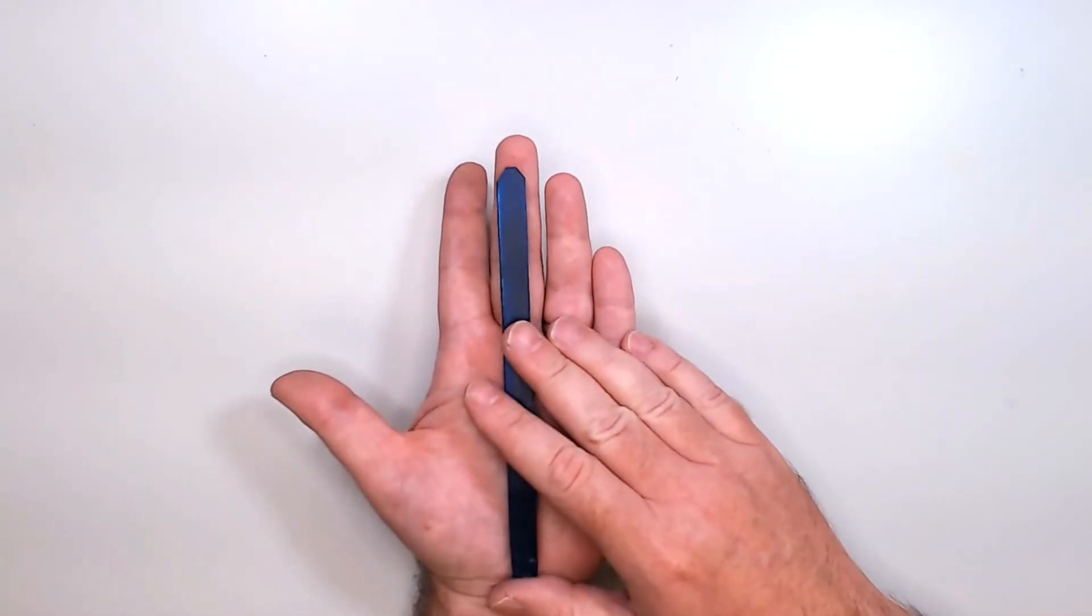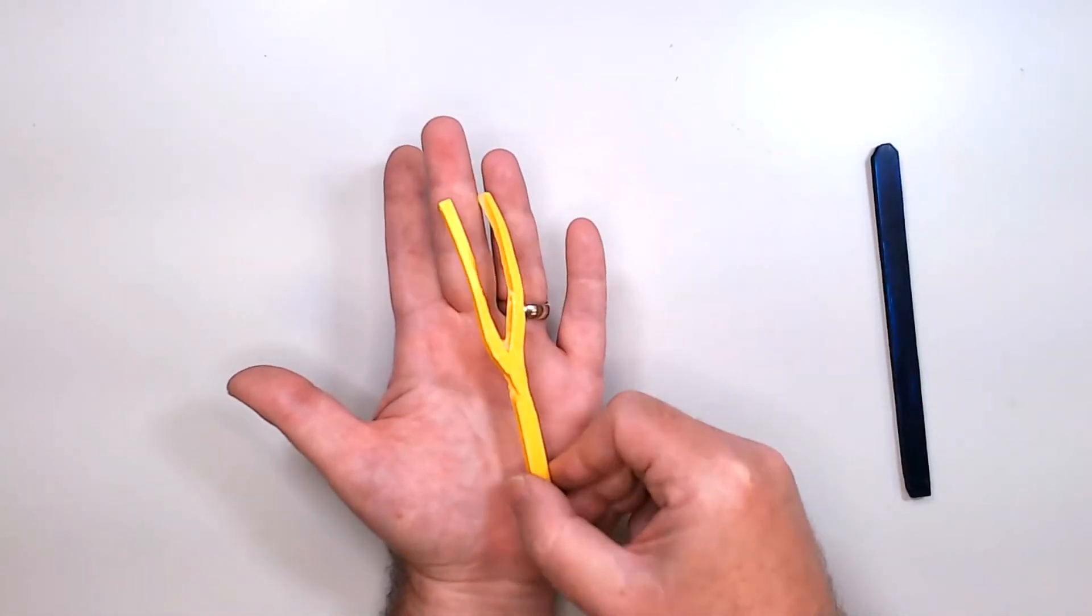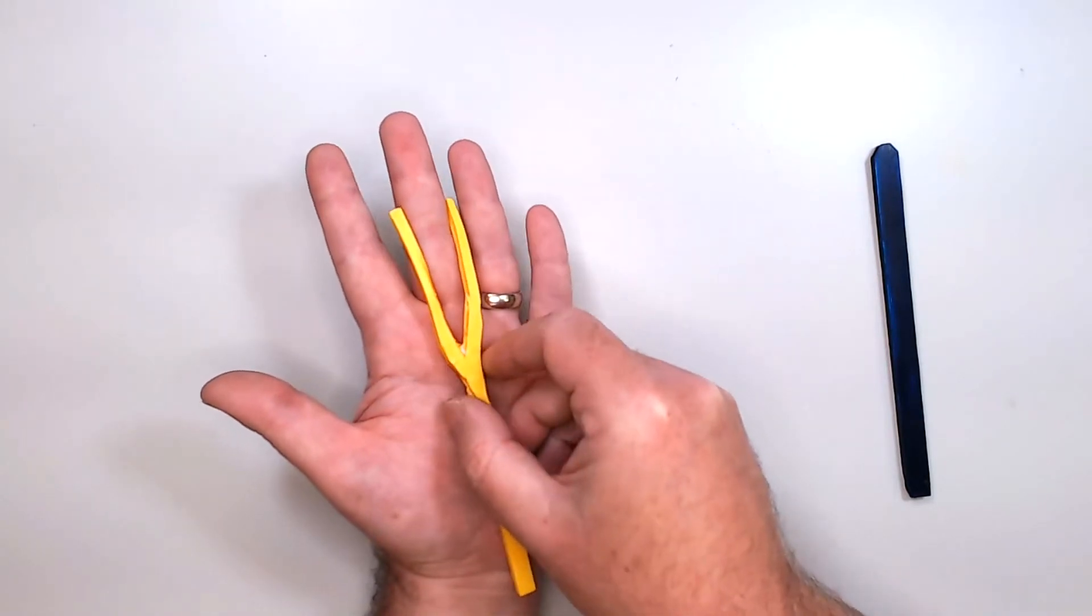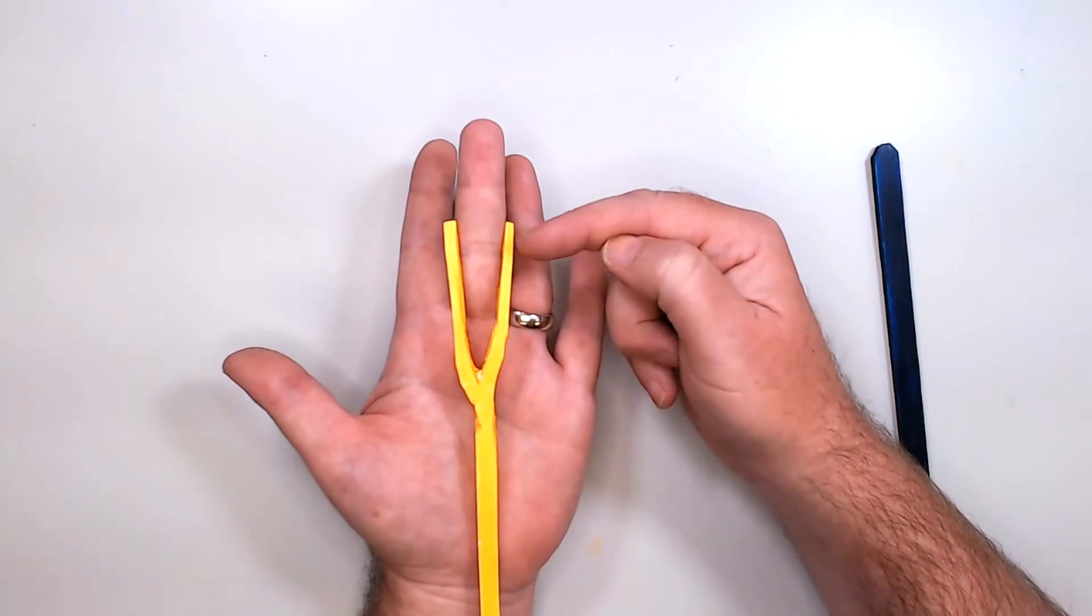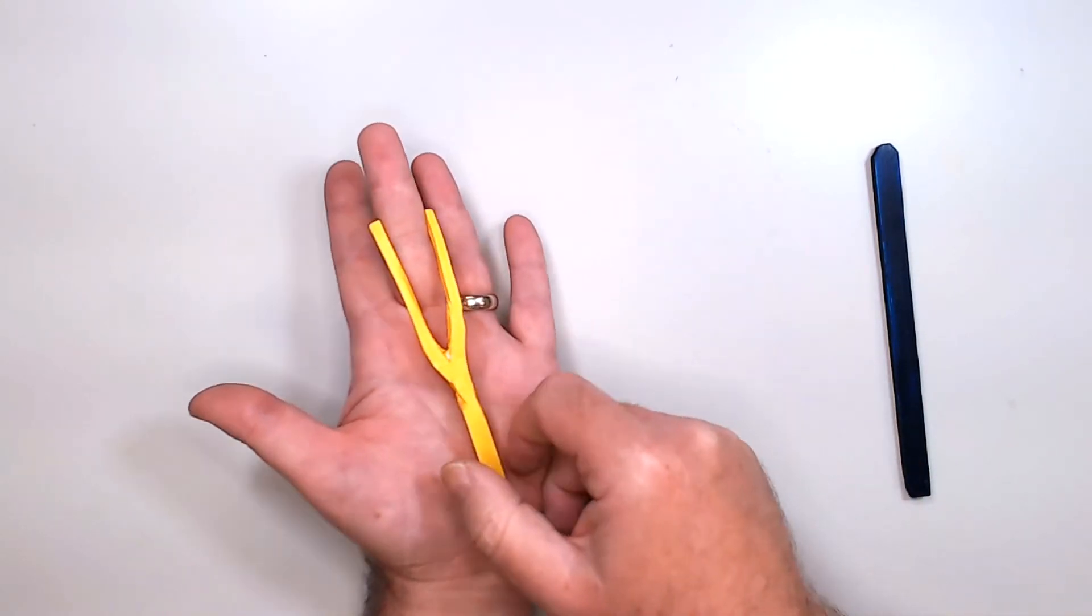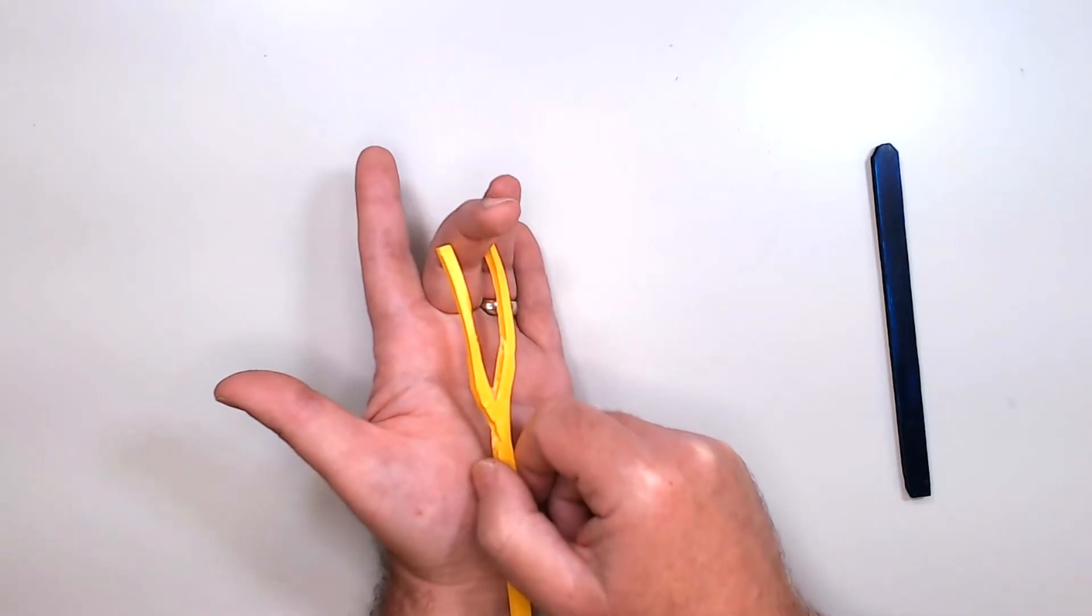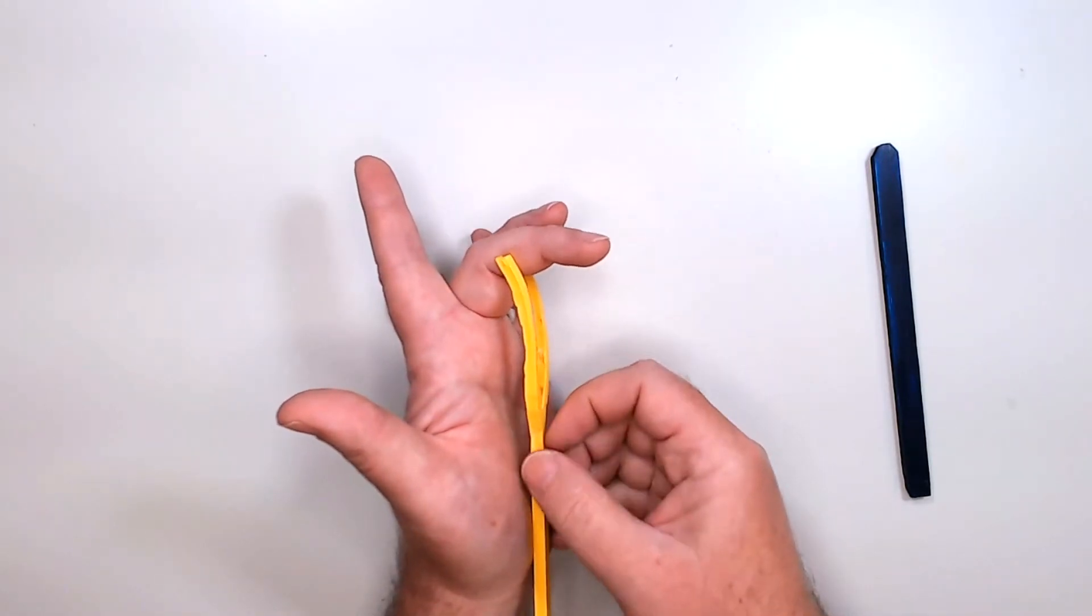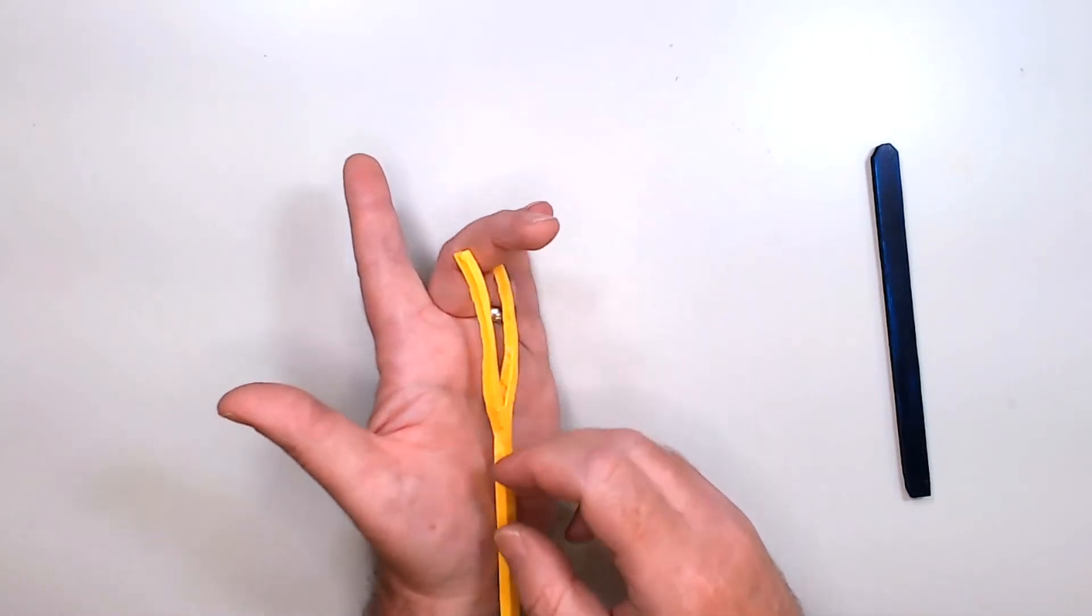Now, if we add the tendon of flexor digitorum superficialis, you can see it inserts just distal to the proximal interphalangeal joint. When you contract that muscle, it flexes the proximal interphalangeal joint and the metacarpal phalangeal joint.